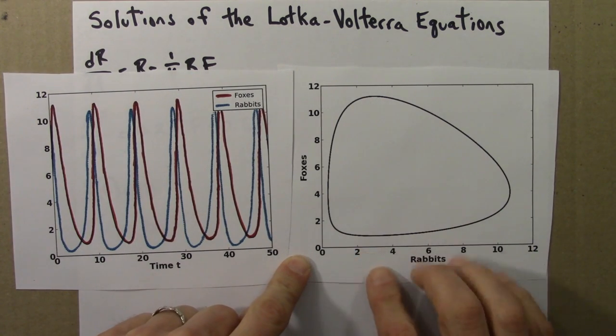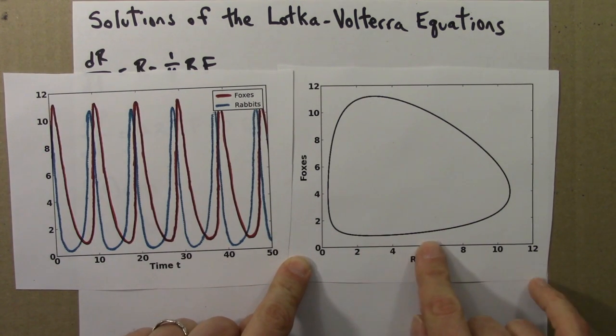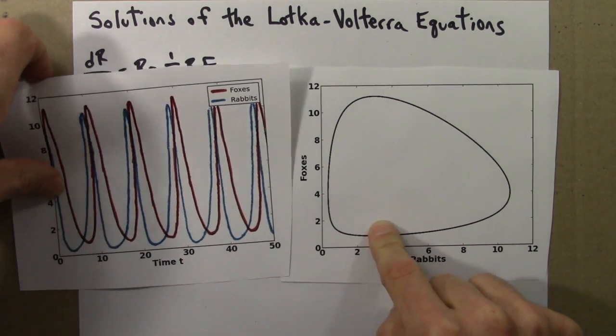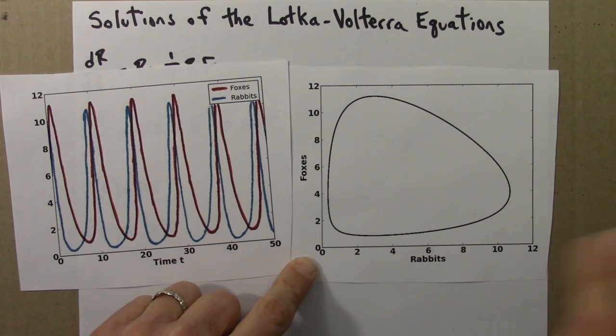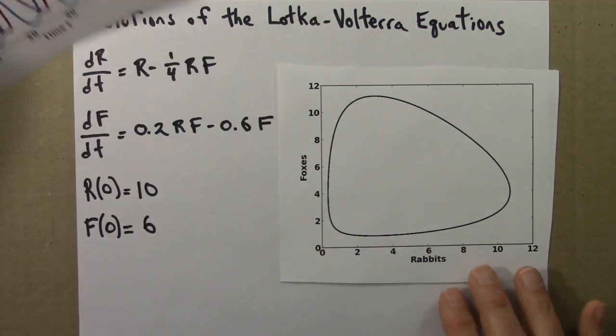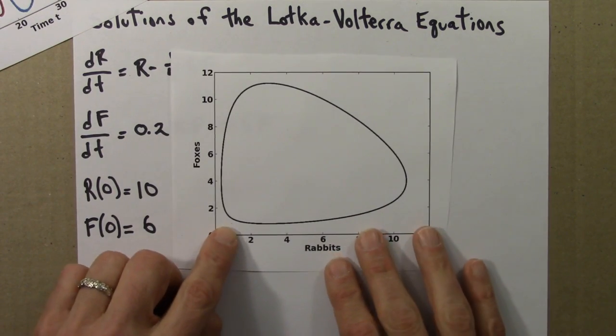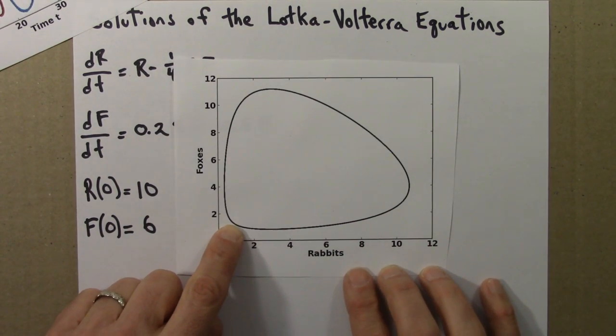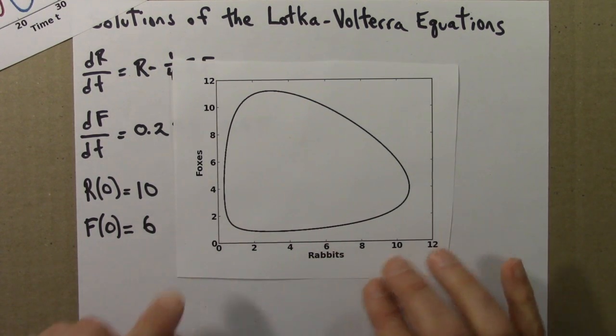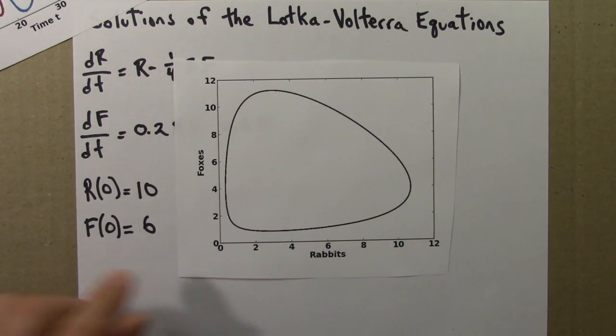And I think it's easiest to make sense of this by talking through this cycle using rabbit and fox stories. So let's start here in the lower left. This is the rabbit axis, how many rabbits there are. This is how many foxes there are.